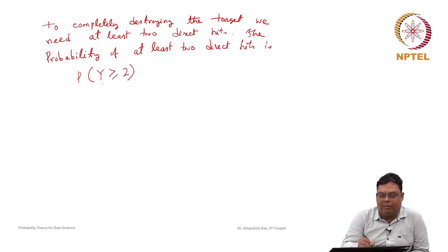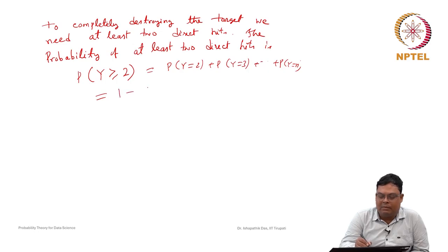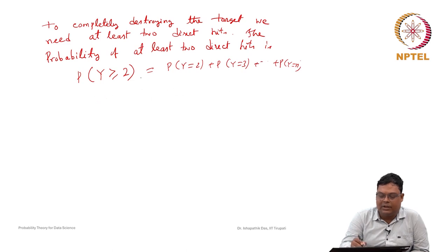Y is the random variable representing how many bombs strike out of n bombs. At least two means it may be 2, 3, and so on. Since n is unknown, this is the probability that Y equals 2 plus probability Y equals 3, up to probability Y equals n. Since the sum of all probabilities equals 1, this is nothing but 1 minus probability Y equals 0 minus probability Y equals 1, which is 1 minus the complement event Y less than 2.